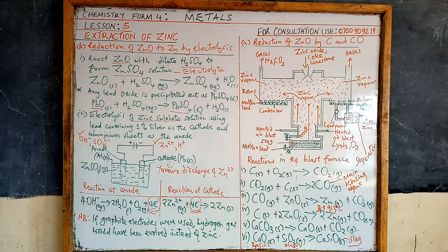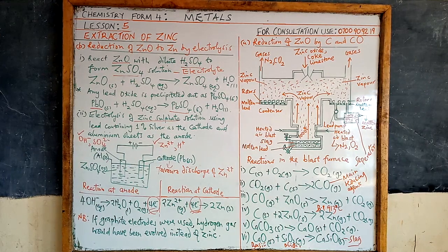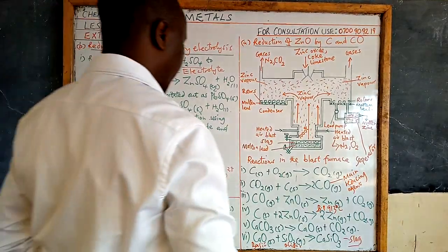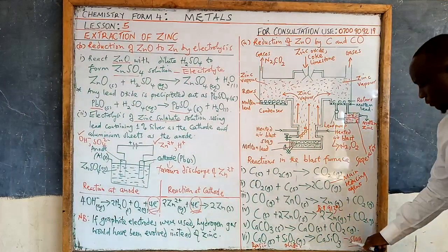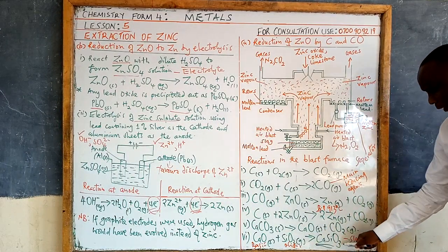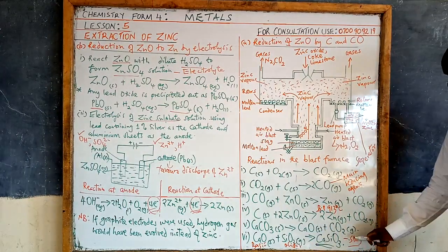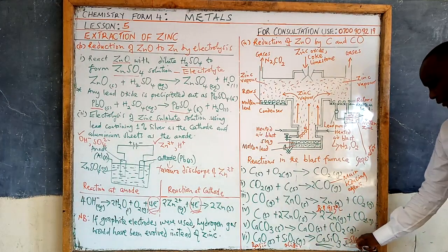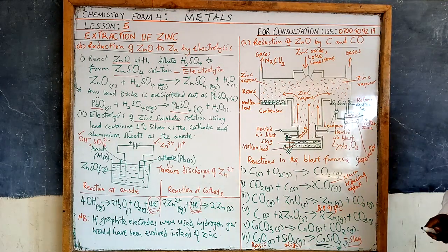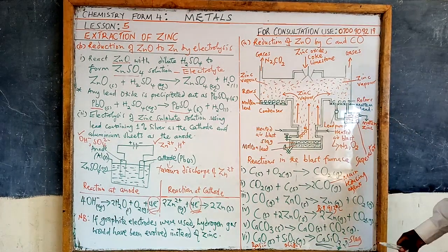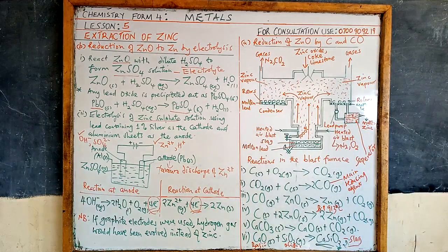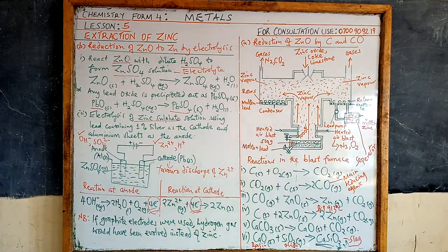Before summarizing, a correction: the formula of calcium silicate — the coefficient 3 was omitted, so there should be a 3 in the formula. Now let's look at the summary flowchart.